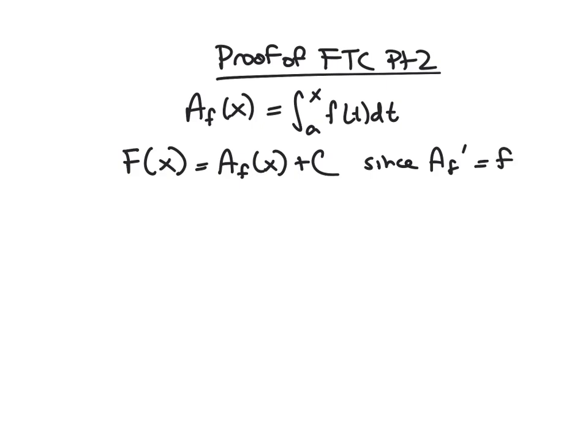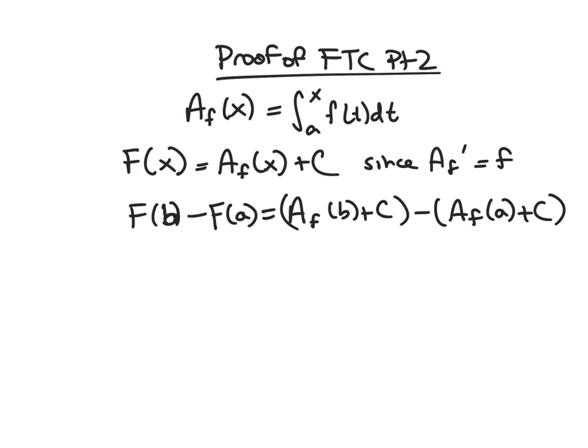Why is this useful? Now look at F(b) minus F(a). Plugging in, we get A_F(b) + C minus A_F(a) + C. The plus C's cancel each other out, so the constant doesn't really matter. We get A_F(b) minus A_F(a).